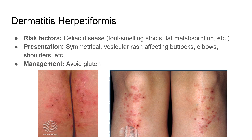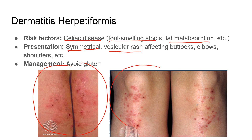Dermatitis herpetiformis is seen in patients with celiac disease. The question won't specifically say celiac, but the patient will have a history of foul-smelling stools, fat malabsorption, and then skin findings. Presentation: symmetrical, pruritic rash most commonly affecting the buttocks, elbows, and shoulders on NBME exams — either fluid-filled vesicles or areas where vesicles have ruptured and crusted over. Management: avoid gluten — just as you'd manage celiac disease.